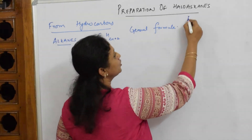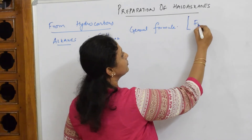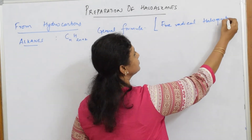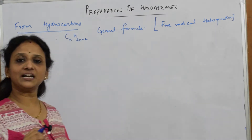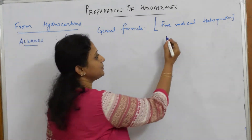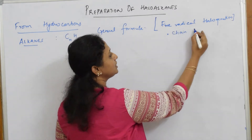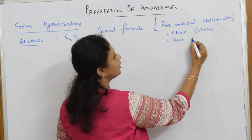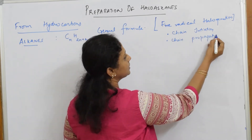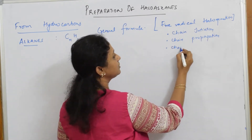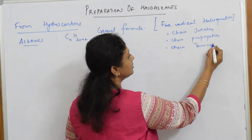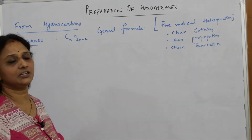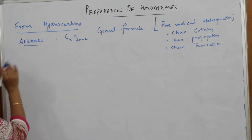Alkanes undergo free radical halogenation. As you studied in grade 11, free radical halogenation follows three important steps: chain initiation, chain propagation, and chain termination. Using that information, we are going to prepare haloalkanes from alkanes.